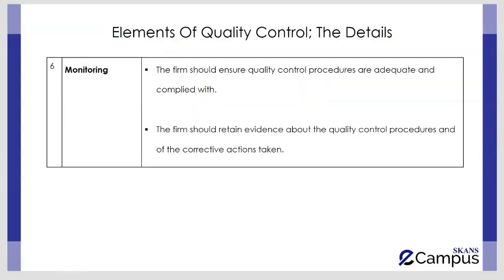The last element of quality control is monitoring. The firm must ensure that quality control procedures are adequate and complied with. They also need to retain evidence about the relevance, adequacy, and effectiveness of quality control procedures and of any corrective actions taken. You can't simply claim to have quality control — you need evidence that it is actually being followed and that corrective actions were taken wherever needed.